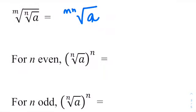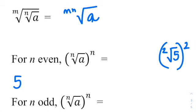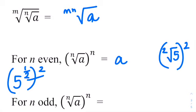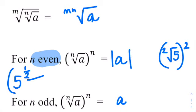The last property: the Nth root of A raised to the N. For example, the square root of 5 squared is the same as 5 to the one half squared — those exponents cancel and you get 5 to the 1, which is just A. But remember, we can only have positive numbers come out of even roots, so whenever N is even, you take the absolute value of A. Whenever N is odd, like a cube root, you can have negative numbers come out, and it's just A.